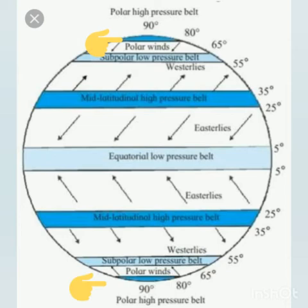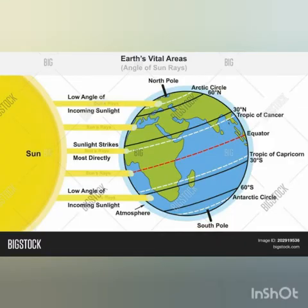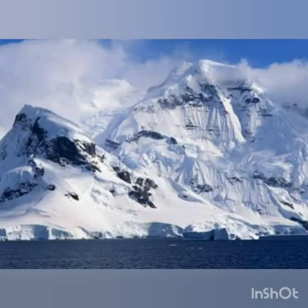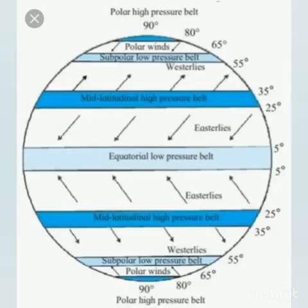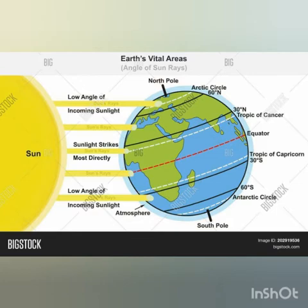Now, the polar high pressure belts. In both the polar regions, the temperature is below 0 degrees Celsius throughout the year. Because of the earth's shape, the sun's rays cannot reach these two areas, so the air is very cold, and as a result, high pressure belts get formed. These are called the polar high pressure belts, and they generally occupy the area between 80 degrees and 90 degrees parallels in both hemispheres.